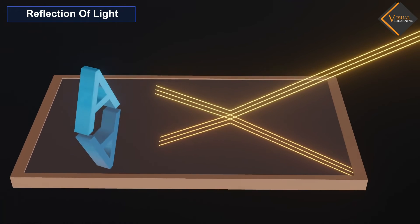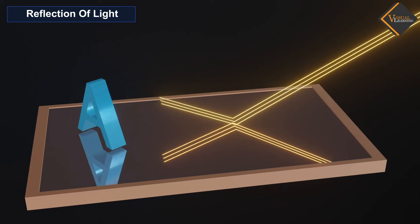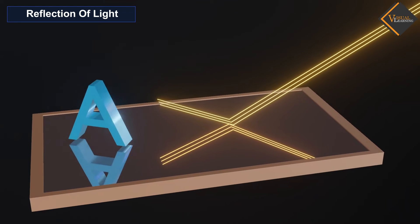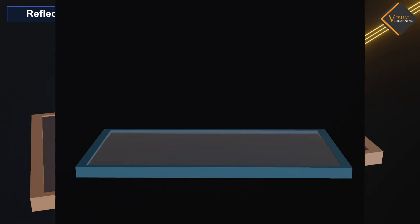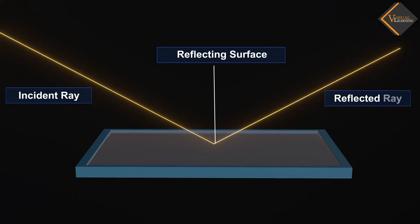Light propagates in a straight line before, after, and during reflection. The surface on which the light ray incidents is known as the reflecting surface. The incident light ray that lands on the surface is called the incident ray. The light ray that bounces back is called the reflected ray.